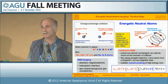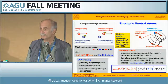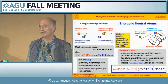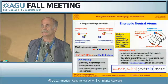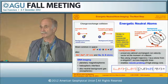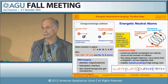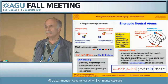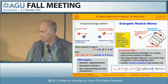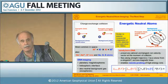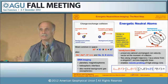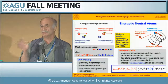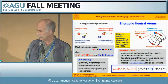ENA imaging has so far focused on studies of planetary magnetospheres and the heliospheric interface, and the tenuous neutral environments around planets like Mars and Venus have also been probed. The energetic neutral atom fluxes that are detected are essentially the integrals along the line of sight over the ion distributions and neutral atom densities.